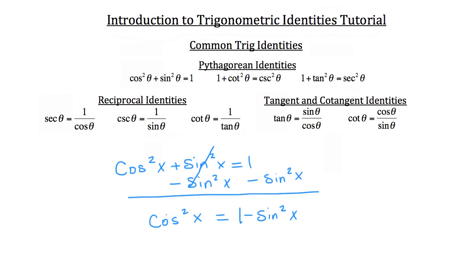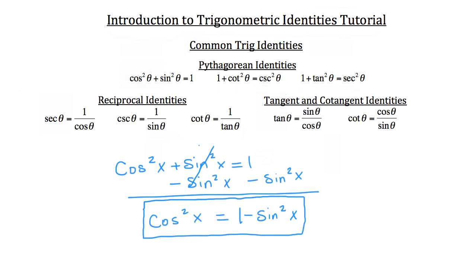This is completely common in trig identities. In fact, you're going to see this kind of work in almost every problem, where you're rearranging identities. You're not changing them — you're simply rearranging the terms in order to solve the trig identity. This can be done with any of these identities: the Pythagorean identities, the reciprocal identities, and the cotangent identities. It's best to have a little library of these identities in front of you. Eventually you'll memorize them, but in the beginning you really want to have them available.